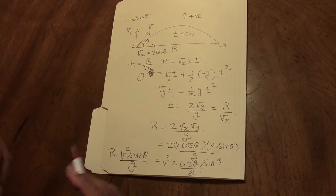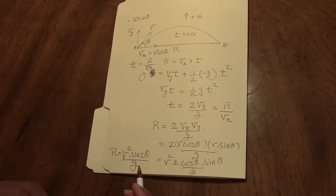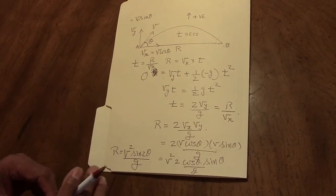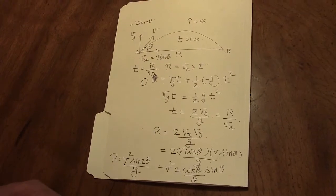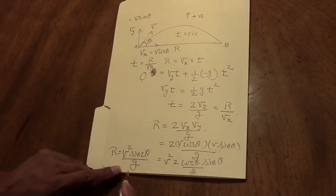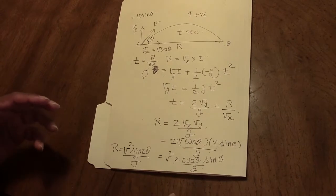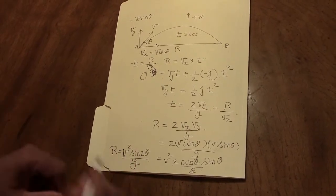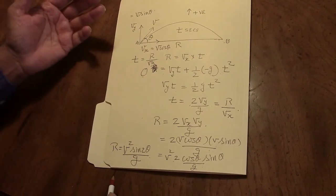So sine 2 theta will be sine 74 degrees, which from the tables comes to 0.9613, and the acceleration due to gravity is 9.8 meters per second squared. You can plug all those numbers in and find the range.